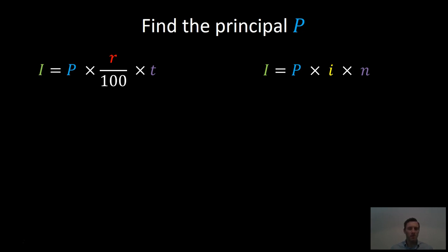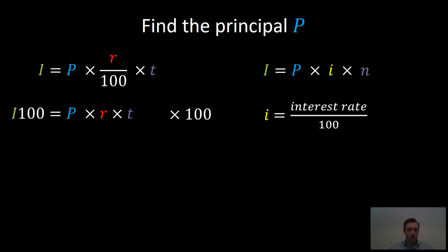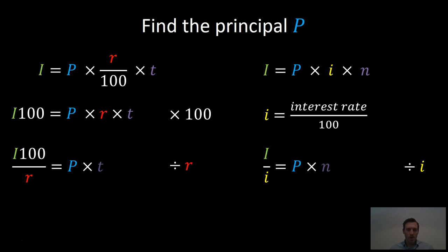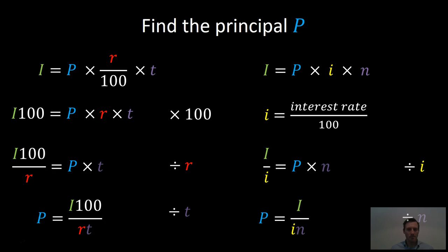I'll show you how to derive the formula for finding the principal here. On the formula on the left, we multiply by 100 first. On the right, we convert our interest rate to a decimal. Then we divide the first formula by R and the second one by I. Finally, we divide the first formula by T and the second formula by M. And now we've rearranged the formula to find P, which is the principal.